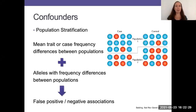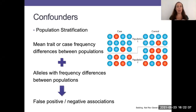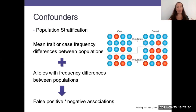One of the key confounders to keep in mind is this idea of population structure and then population stratification. This is essentially where the allele frequency differs across populations and so does the trait of interest — whether you're higher or lower on a continuous trait, or the prevalence of the disease is different across populations. If you put multiple populations together, you could end up with false positives.